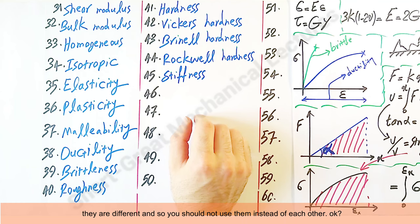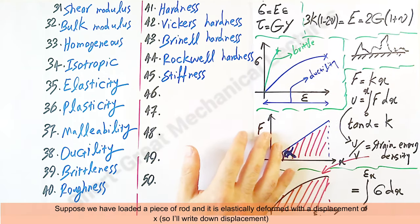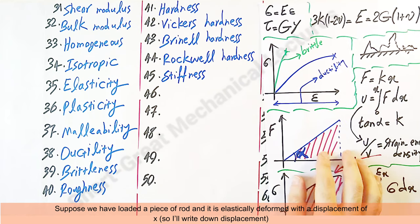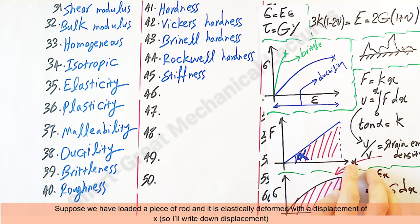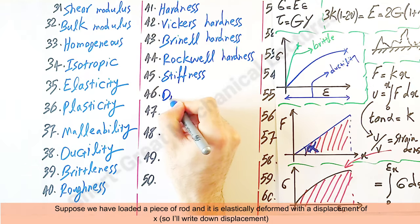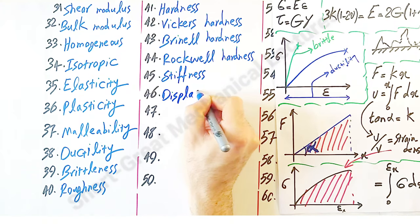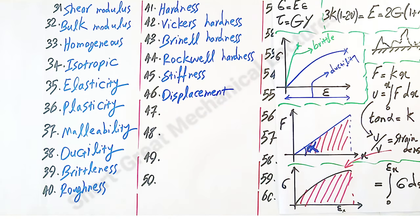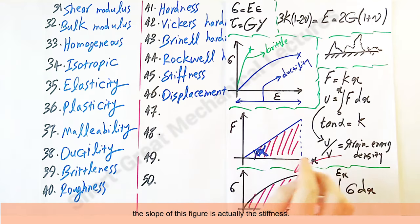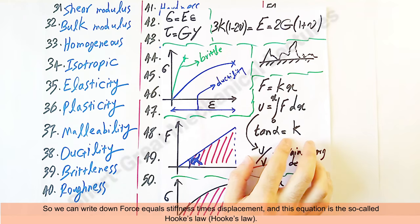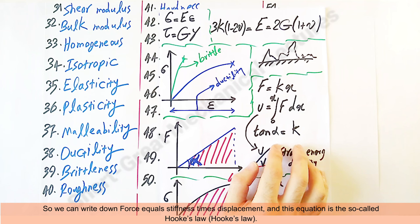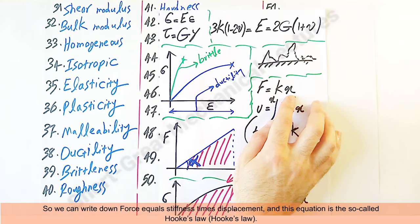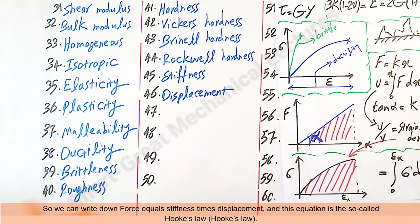Suppose we have loaded a piece of rod and it is elastically deformed with a displacement of X. So I'll write down displacement. The slope of this figure is actually the stiffness. So we can write down force equals stiffness times displacement, and this equation is the so-called Hooke's law.